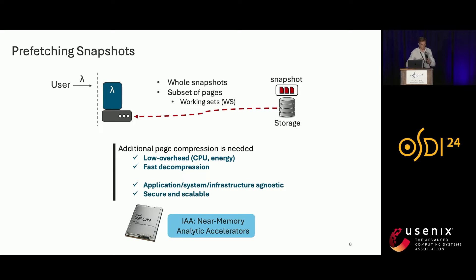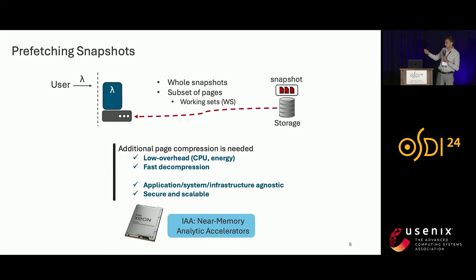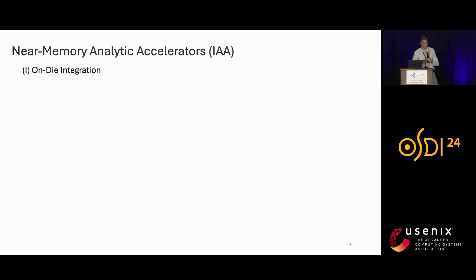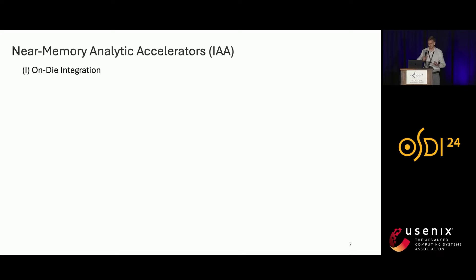This work is based on a different approach to hardware acceleration in the cloud, introduced in the first-generation Xeon processors, also known as Sapphire Rapids. The accelerator I'll be talking about today is called the Near Memory Analytic Accelerator, or IAA. Let me give an overview of three features of IAA that distinguish it from previous mainline cloud accelerators.